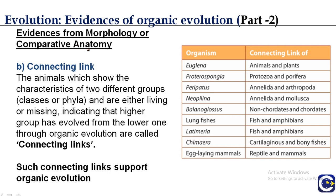These are evidences from morphology and comparative analogy. What are connecting links? Connecting links are organisms that show the characteristics of two different groups — either two different classes or phyla — and they can be either living or missing, indicating that the higher group has evolved from the lower one through organic evolution. These connecting links support organic evolution.